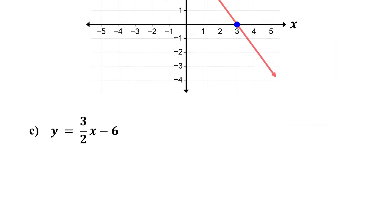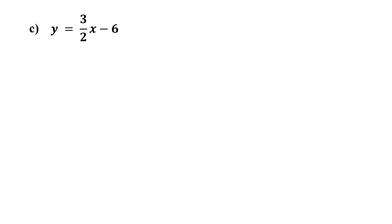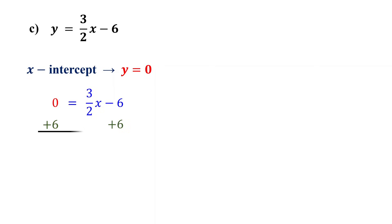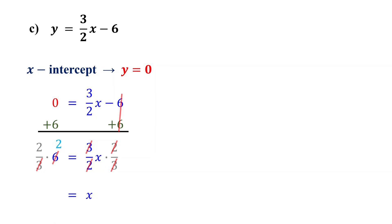But let's also graph equations in slope-intercept form. We will follow the same steps. First, find the intercepts. To find the x-intercept, set y to 0 and solve for x. Add 6 to both sides and you find that 3 halves x equals 6. Next, multiply both sides by 2 thirds. The 2s and the 3s cancel out, leaving just x. 6 and 3 reduces to 2 and 2 times 2 is 4. So, the x-intercept is 4 comma 0.